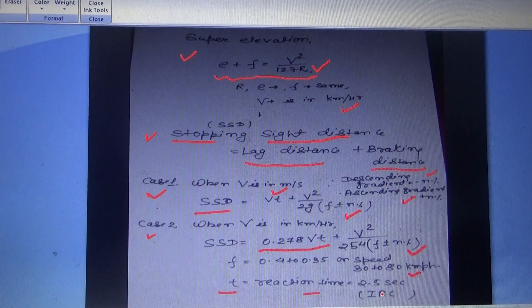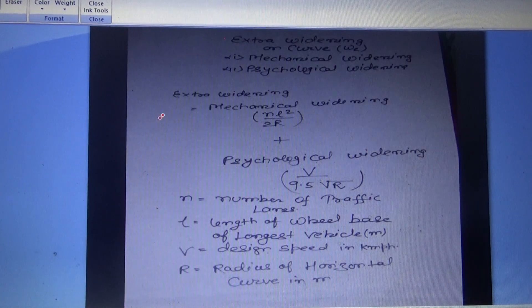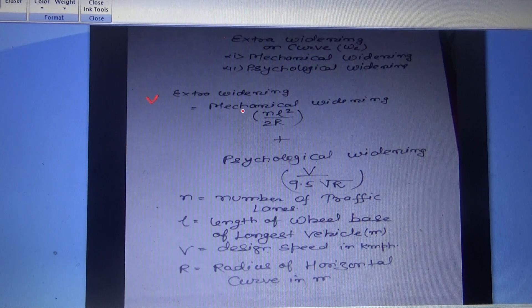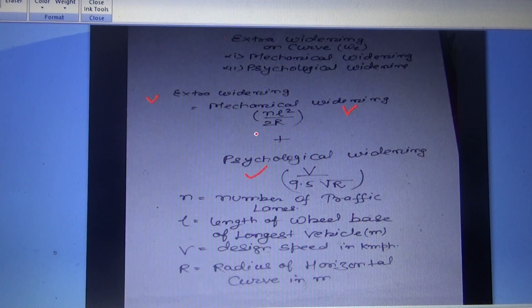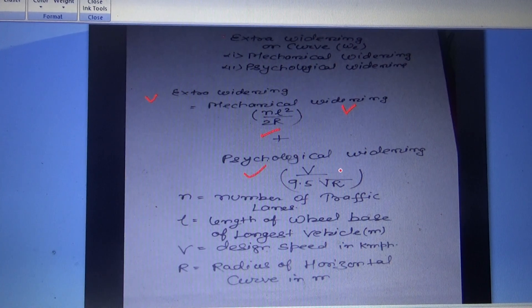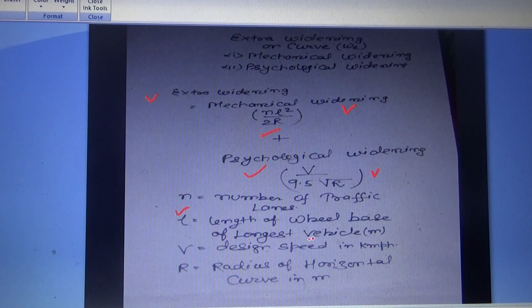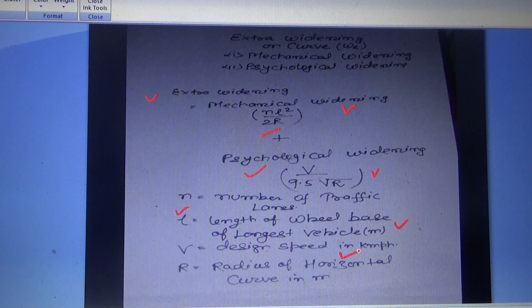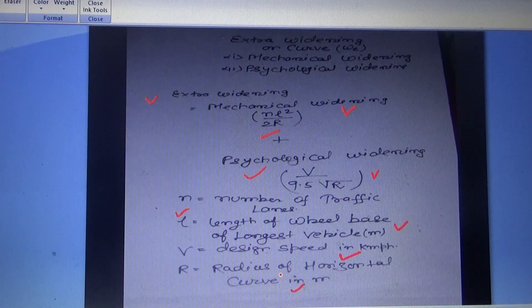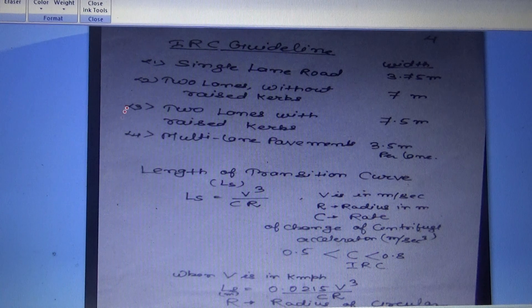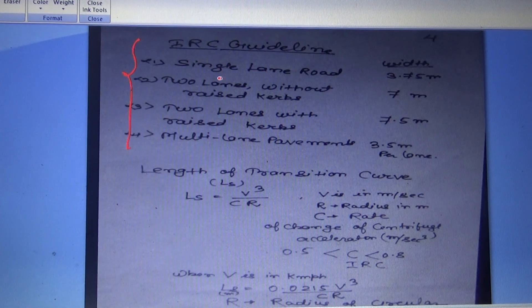Another formula is extra widening = mechanical widening + psychological widening. Mechanical widening = nL² / 2R, and psychological widening = V / 9.5√R, where n is number of traffic lanes, L is the length of wheelbase of the longest vehicle in meters, V is the design speed in km/h, and R is the radius of horizontal curve in meters.